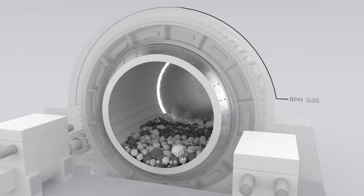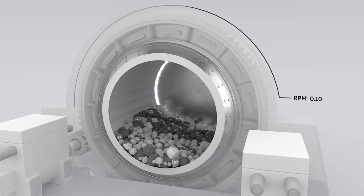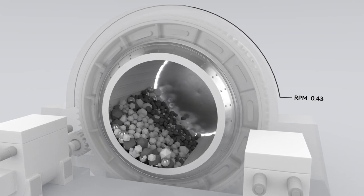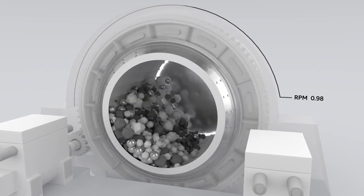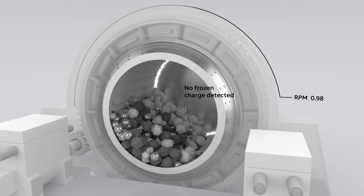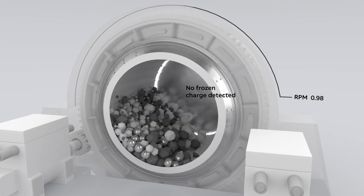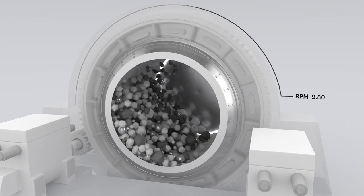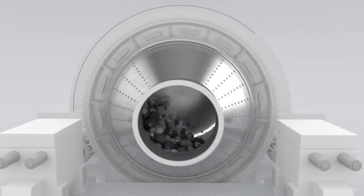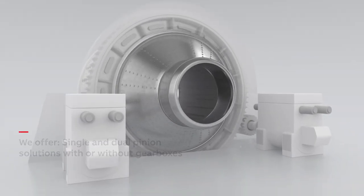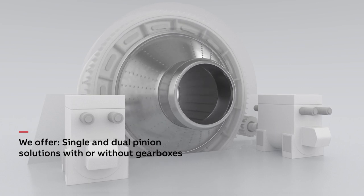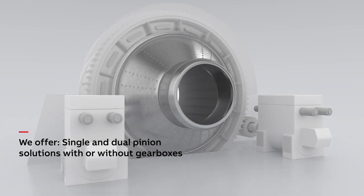The mill starts moving slowly in a frozen charge detection mode. Once the ore input successfully cascades, the drive releases the mill to normal operation and it accelerates to nominal speed. The system can even handle fluctuations of power supply, providing constant torque throughout.